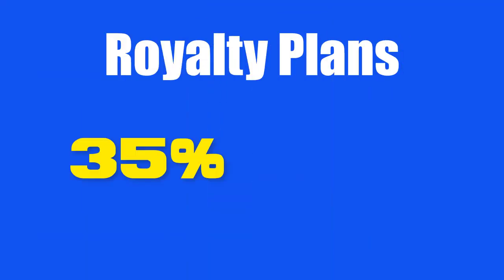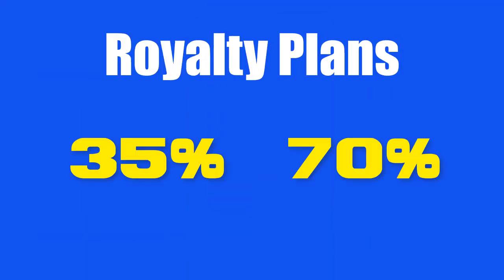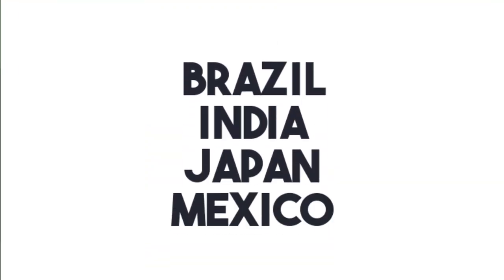You may already be aware that Amazon KDP offers two types of royalty plans: the 35% royalty plan and the 70% royalty plan. Anyone who publishes on Amazon KDP can choose the default 35% royalty plan. In case you want to earn more and reach more readers, you could opt in for the 70% royalty plan, except for some marketplaces such as Brazil, India, Japan, and Mexico.